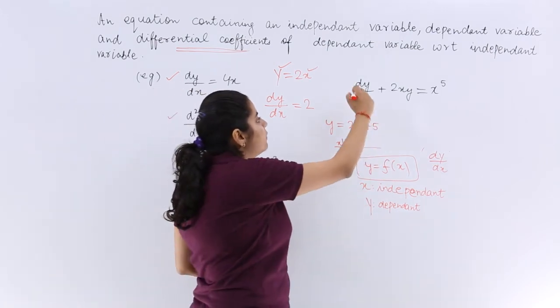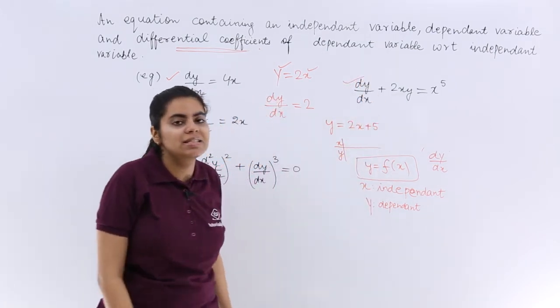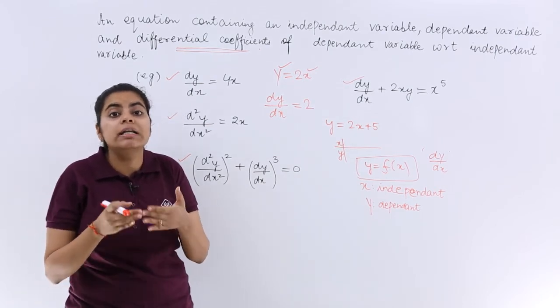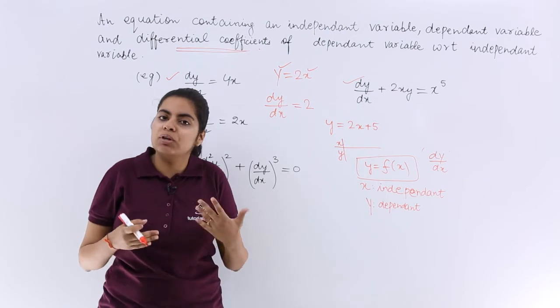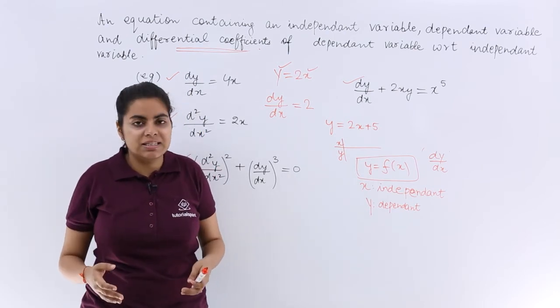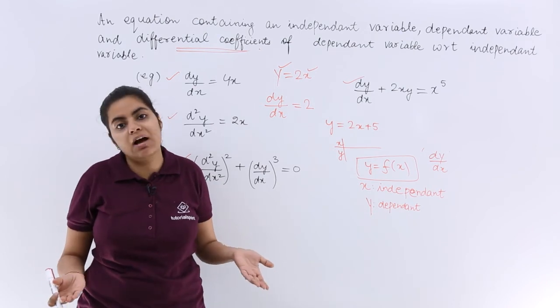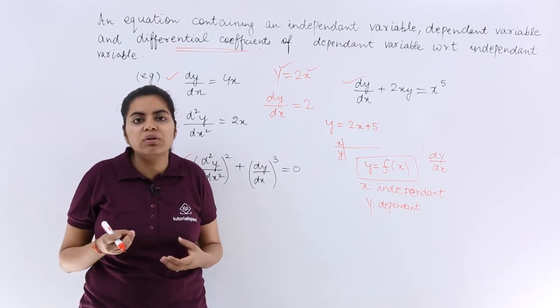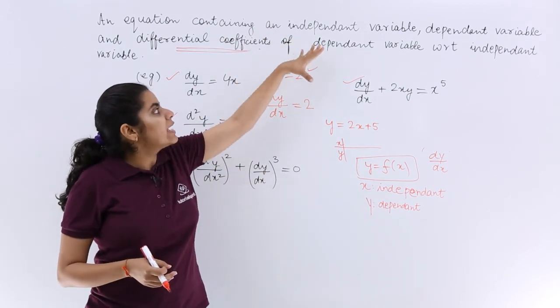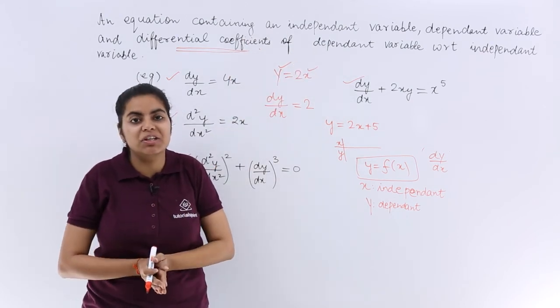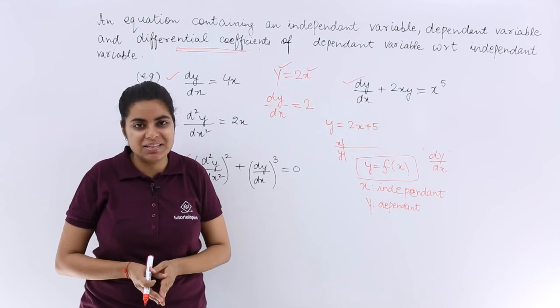Next example is dy by dx plus 2xy equals x raised to the power 5. So now you understand what is a differential equation. But we also need to know in what cases or what would be the scenarios wherein we don't have a differential equation. If you have anything except what the definition says, that must not be a differential equation.